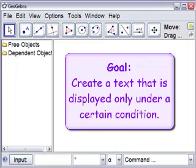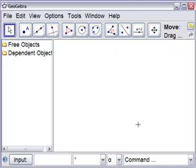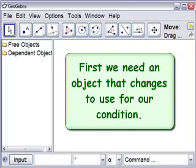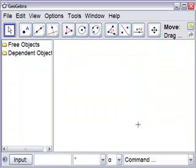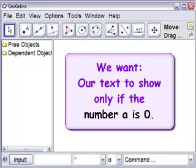Our goal in this screencast is to create a text that is displayed only under a certain condition. So we need to make something that we can make a condition on. Let's say that we want to make a text that is displayed only if a number equals zero.